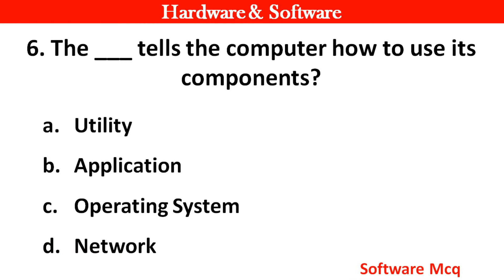Question 6: The dash tells the computer how to use its components. Options: A. Utility, B. Applications, C. Operating system, D. Network. Right answer is option C — Operating system.